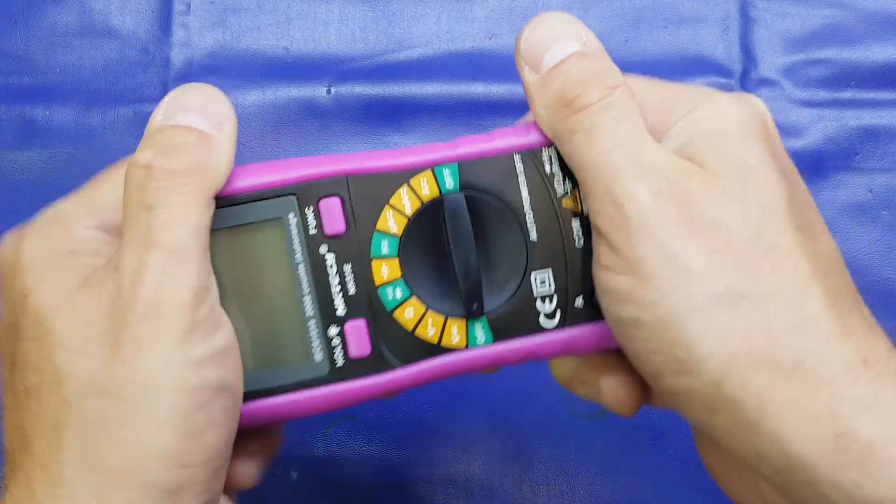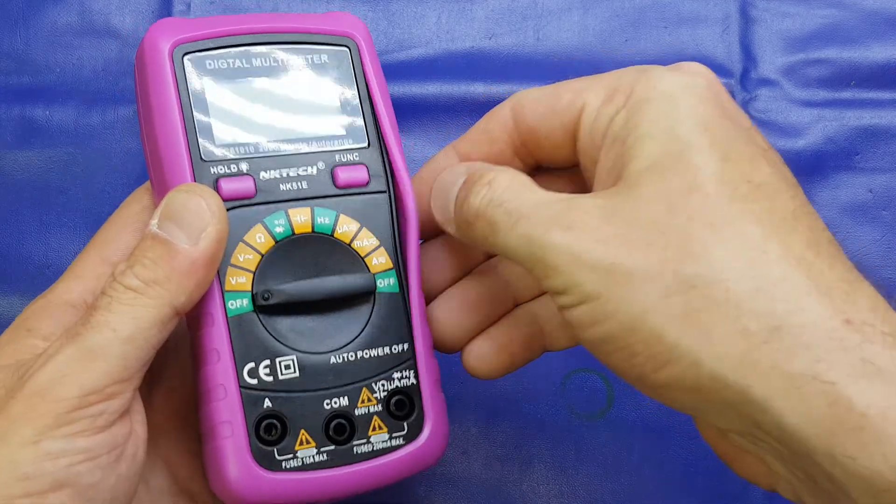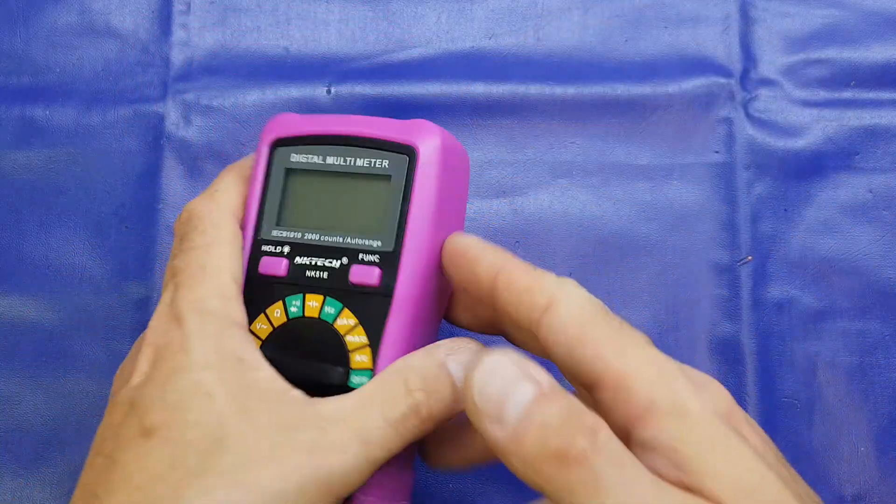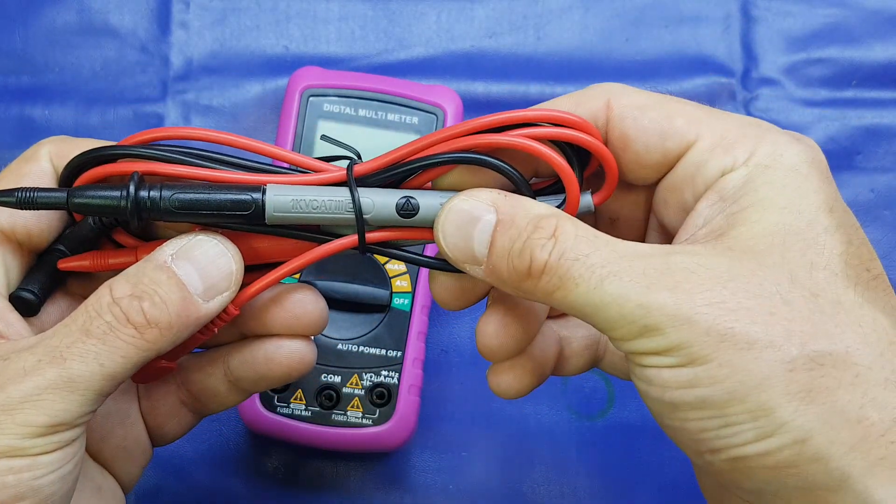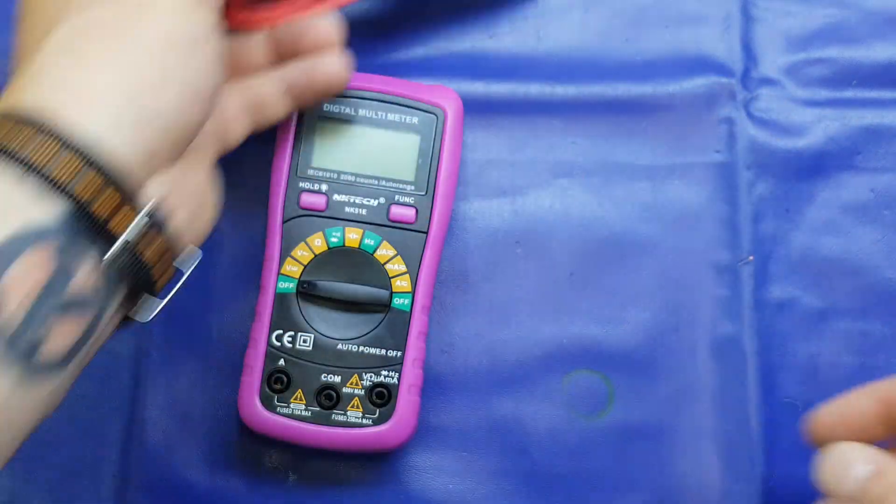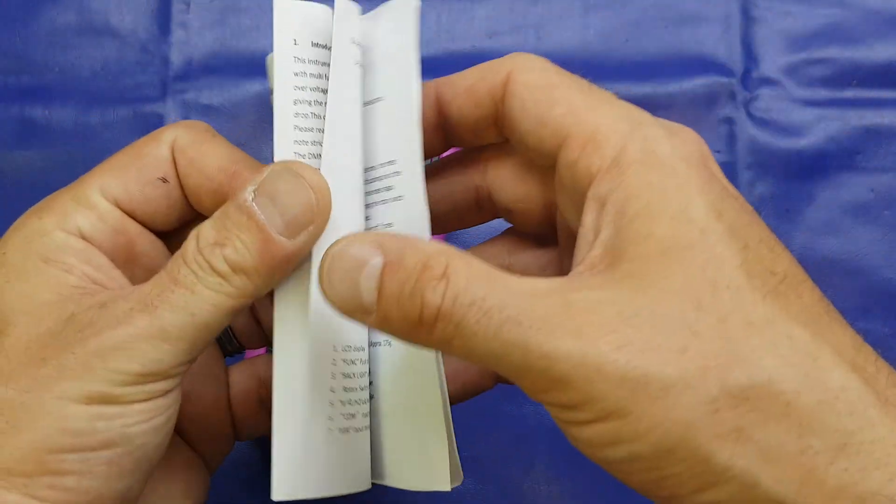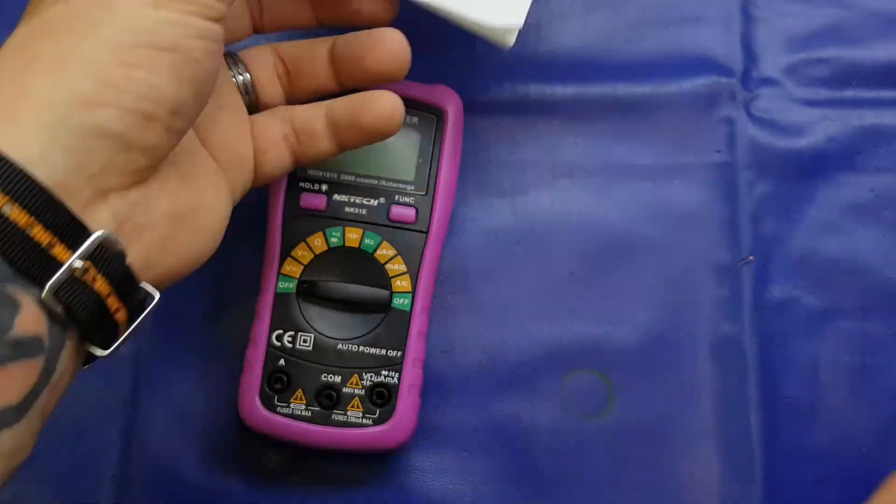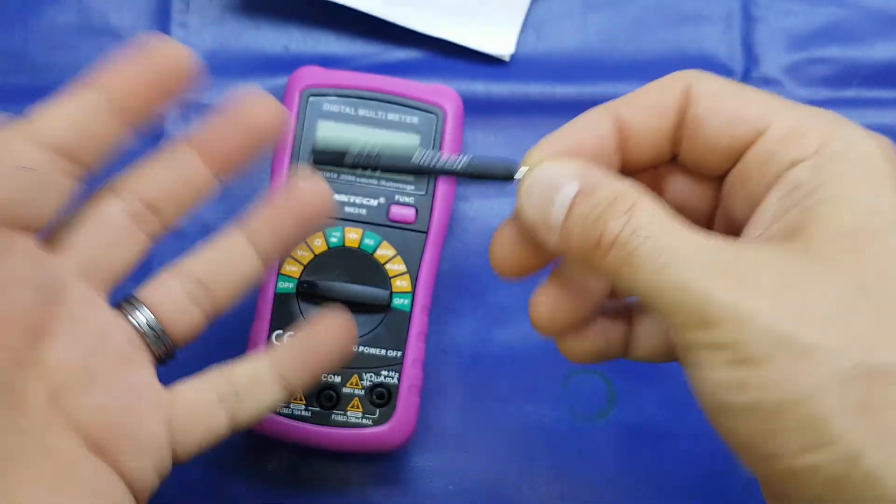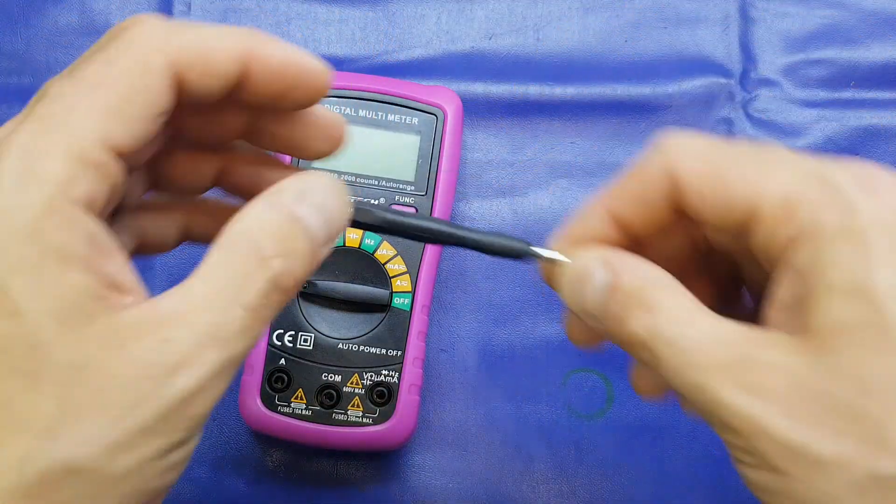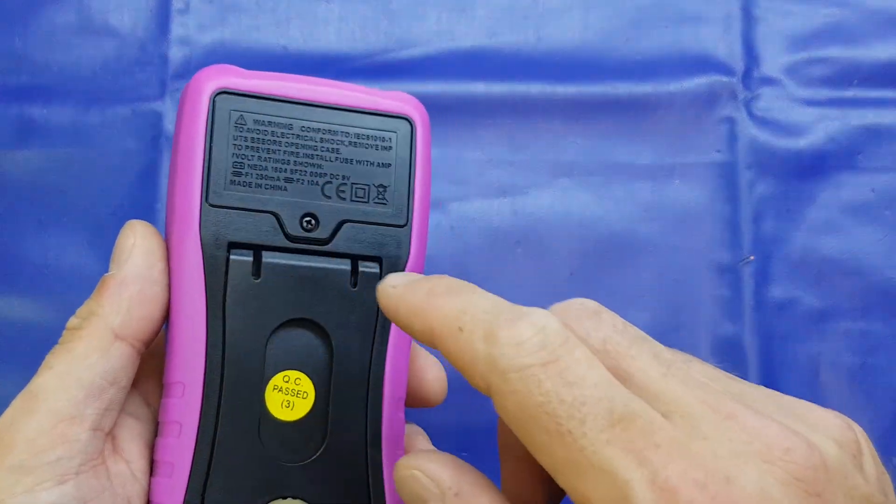It's reasonably robust. It comes with a TPU style cover or holster. Of course we get a set of probes, and these are reasonable quality, claimed to be 1000 volts cat 3. We get printed instructions, these have been reasonably translated, no problems there. And we get a small NK Tech screwdriver which is a nice addition. I've never had a little screwdriver included with a multimeter.